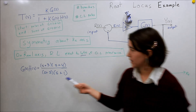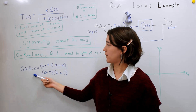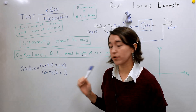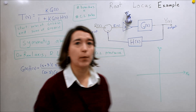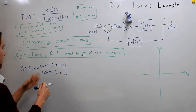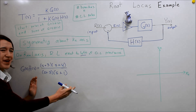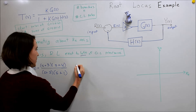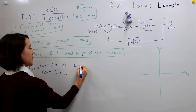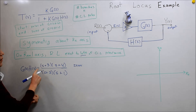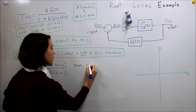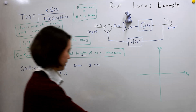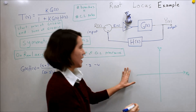Let's take an example. Here is a function for g times h, and we have two poles and two zeros. First let's identify the poles and zeros of this system. Our zeros — it's already in a very nice form. If it's not, you can always factor it into a nice form. But here we have our zeros equal to negative three and negative four.